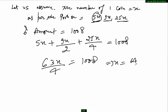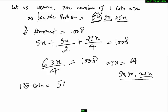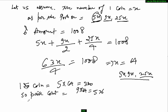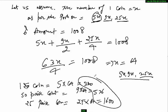Now substituting x = 64 back: the number of 1 rupee coins is 5 into 64 which is 320. The number of 50 paise coins is 9 into 64 which is 576. The number of 25 paise coins is 25 into 64 which is 1600. Adding all the amounts gives 1008 rupees, confirming the answer.